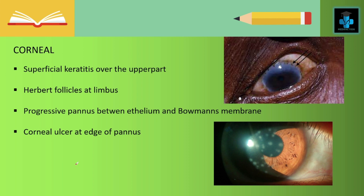Next, let's see the corneal signs. In case of the cornea, there will be superficial keratitis over the upper part. Also there will be presence of Herbert follicles at the limbus — this junction here is known as the limbus. There will also be progressive pannus between the epithelium and Bowman's membrane, and a corneal ulcer at the edge of the pannus.